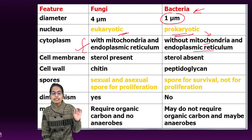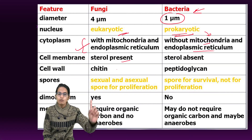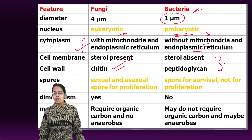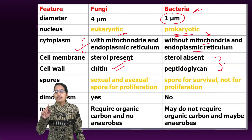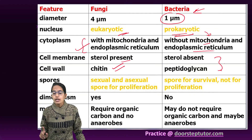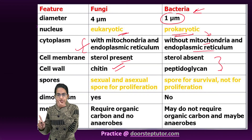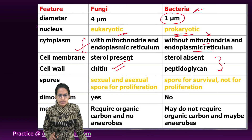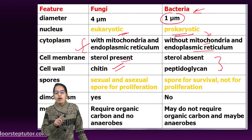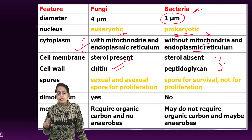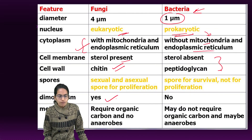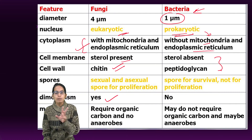In fungi, sterols are present and the cell wall is made of chitin. In the case of bacteria, sterols are not present and the cell wall is made of peptidoglycan — very, very important. The bacterial cell wall is peptidoglycan; the fungal cell wall is chitin. Bacteria does not proliferate; however, for fungi to proliferate, spores are required. There is dimorphism seen in fungi but not in bacteria.